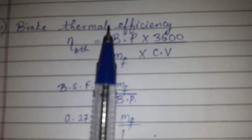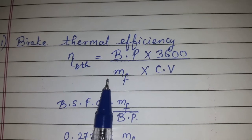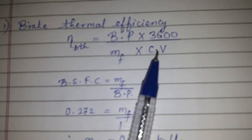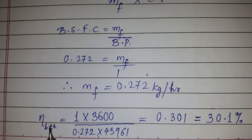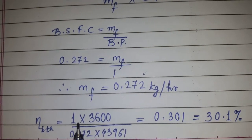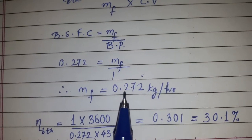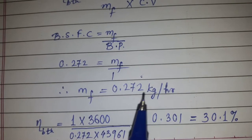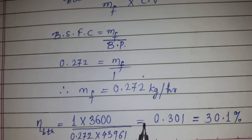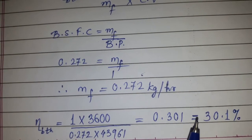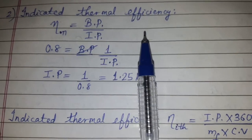Now we know MF. For brake thermal efficiency, BP is taken as 1, MF is 0.272 kg per hour, and CV is given. So brake thermal efficiency equals 1 multiplied by 3600, divided by 0.272 multiplied by 43961, giving 0.301, that is equal to 30.1%.